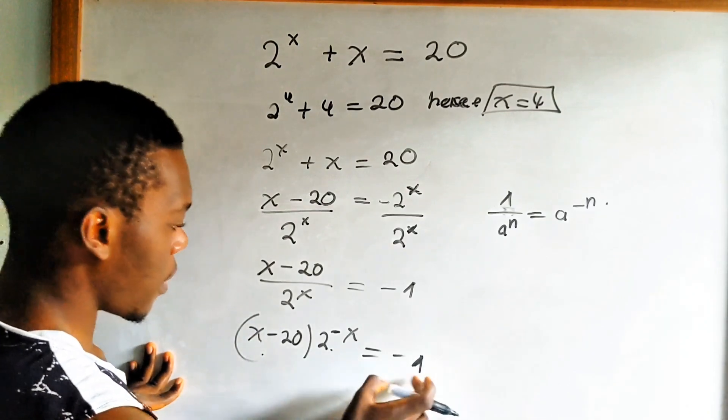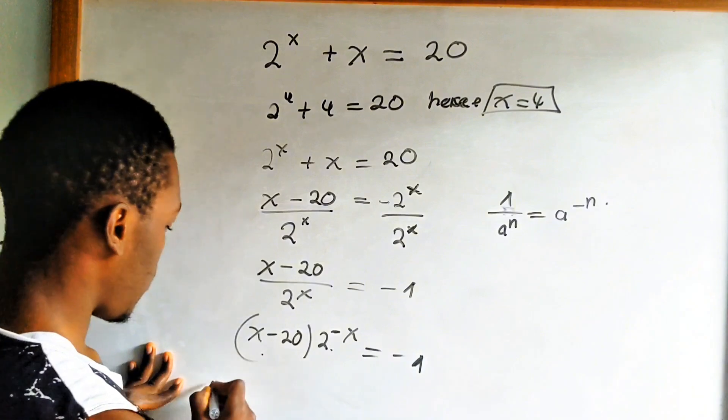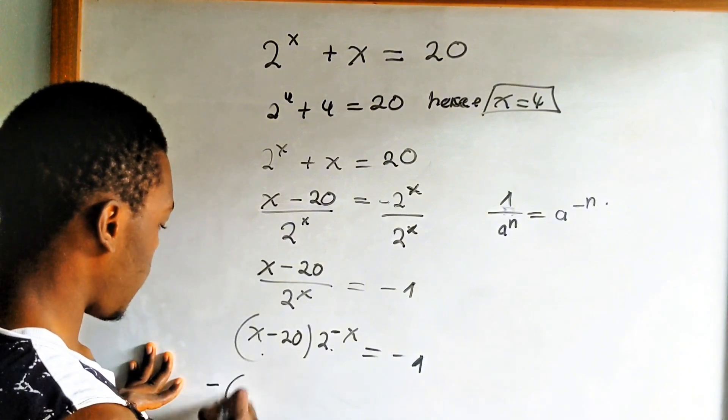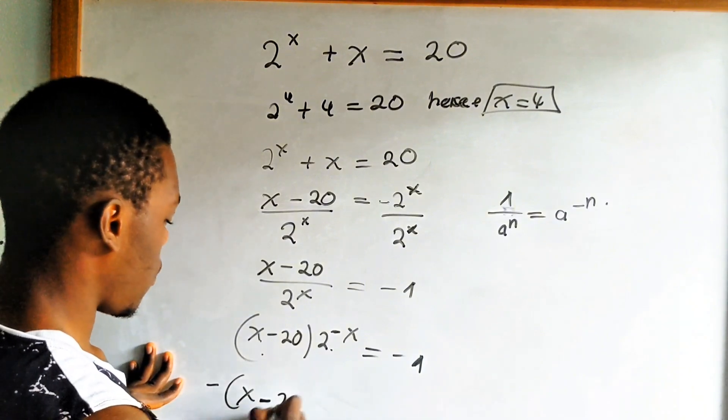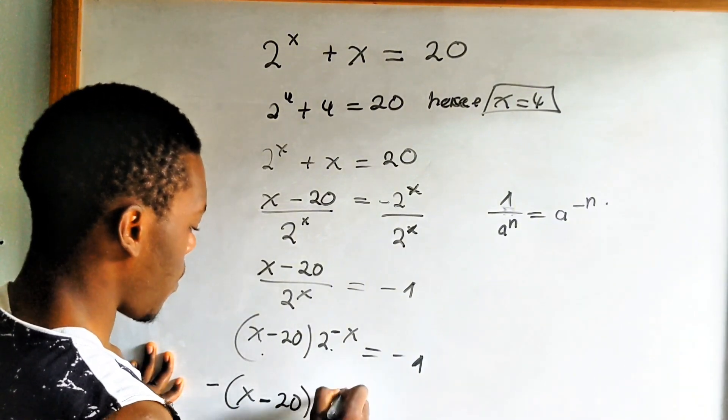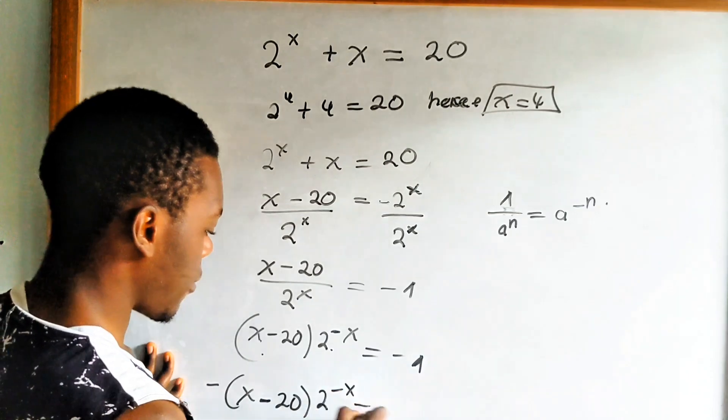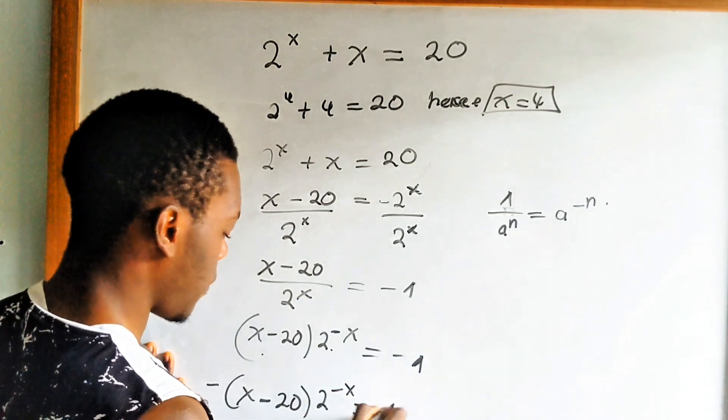We can then bring this negative here to have negative x minus 20 to the power x is equal to 1.